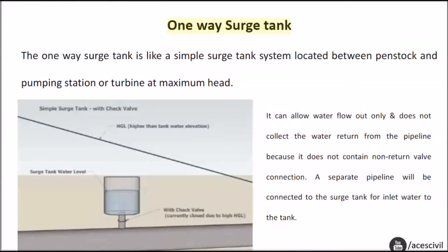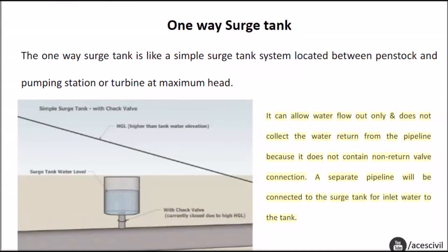One-way surge tank: The one-way surge tank is like a simple surge tank system located between the penstock and pumping station or turbine at maximum head. It can allow water flow out only and does not collect the water returning from the pipeline because it does not contain a non-return valve connection. A separate pipeline will be connected to the surge tank for inlet water to the tank.